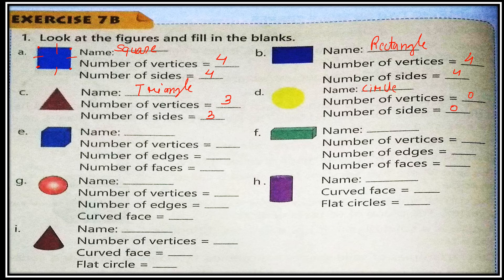A circle has zero vertices and no sides — no corners in a circle. Now this is a solid shape: a cube. It looks like a square but it is a solid shape. It has eight vertices, twelve edges, and six faces.